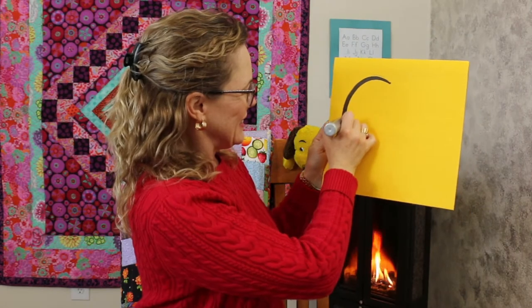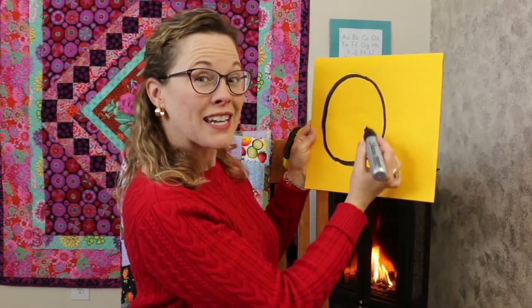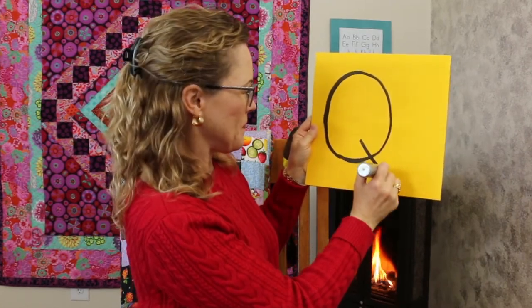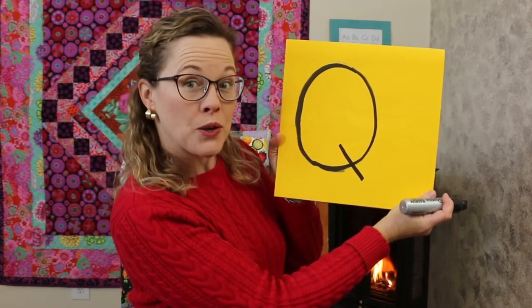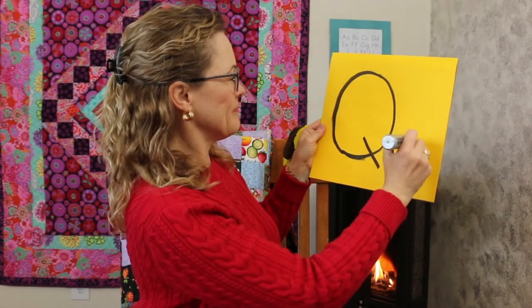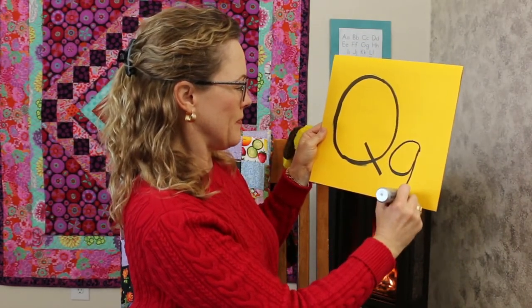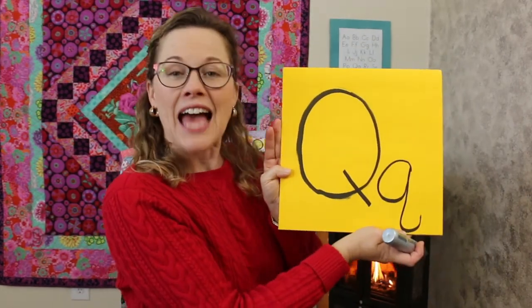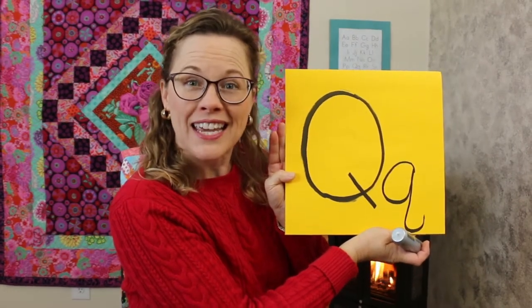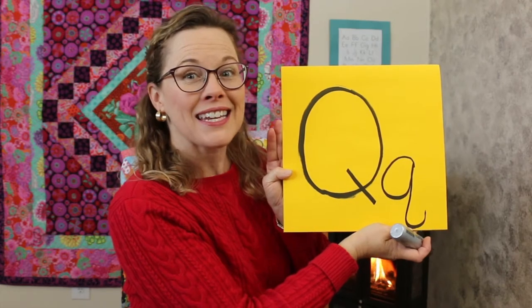Today's letter comes right after the letter P in the alphabet, and it's the first letter in the word quarantine. If you can guess what that letter is, go ahead and say it while I draw it. I'm not finished — I need one more part. What's this letter? This is the letter Q. This is a big Q. Let's draw a little Q. Big Q, little Q. And Q makes the sound Q.